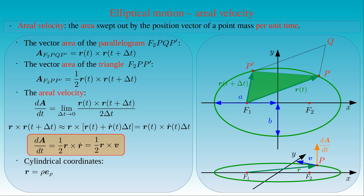Since we talk about planar motion, its z-component vanishes. The velocity, which is tangential to the ellipse at point P, is given by rho-dot times the basis vector E_rho, plus rho times phi-dot times the basis vector E_phi.